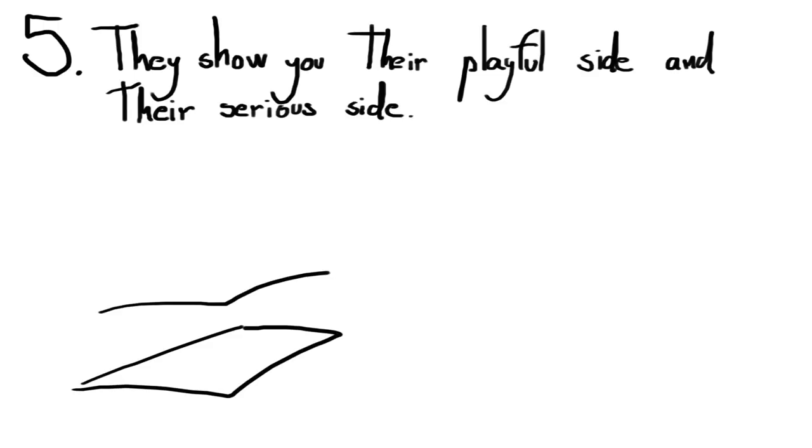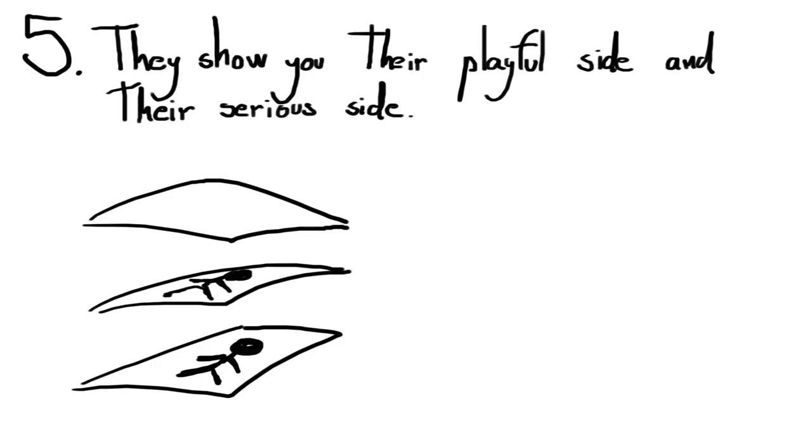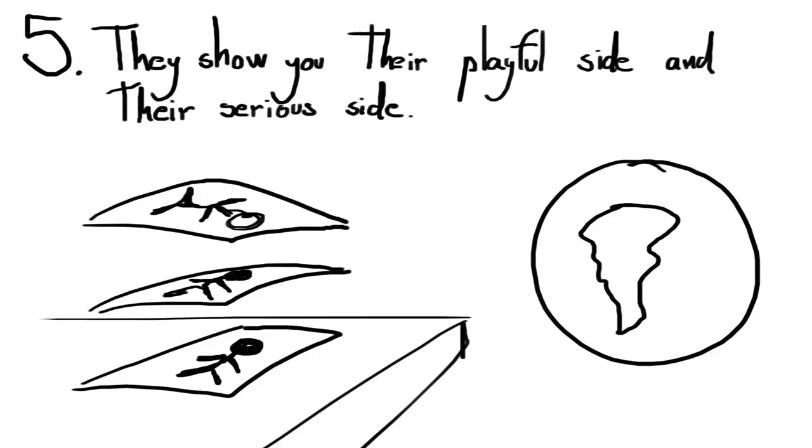Five: They show you their playful side and their serious side. As your relationship with an ambivert deepens, you start to discover more and more layers to their personality. This means they're letting you into their own little world, which can be a side completely different from the one you saw when you first met them.